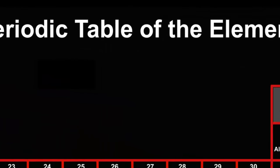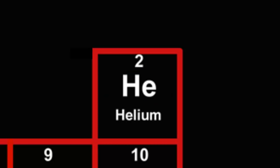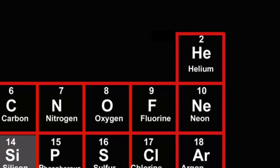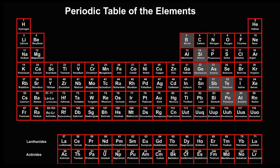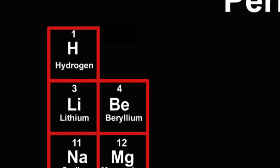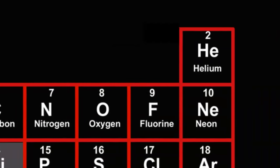Zooming into helium at the top right, we can see that its symbol is He — big H, little e — to make it a bit different to hydrogen's. And its atomic number is 2, being the second lightest element. The third lightest element is lithium, so it has an atomic number of 3. Where's lithium? It starts the next row, which goes up to atomic number 10 before another row is started.